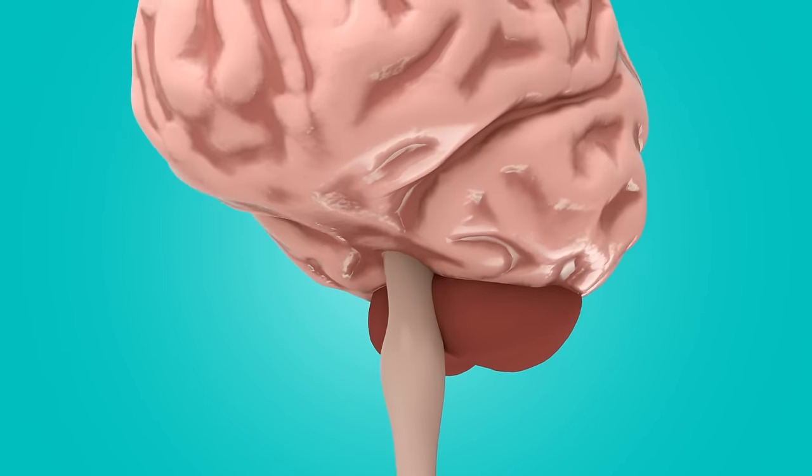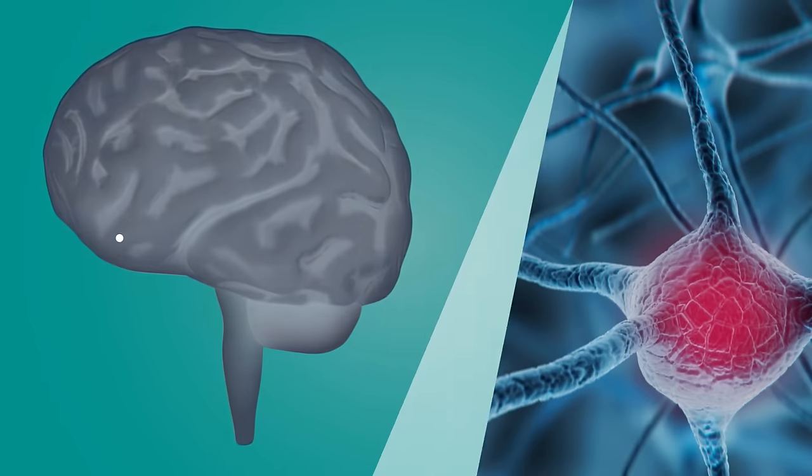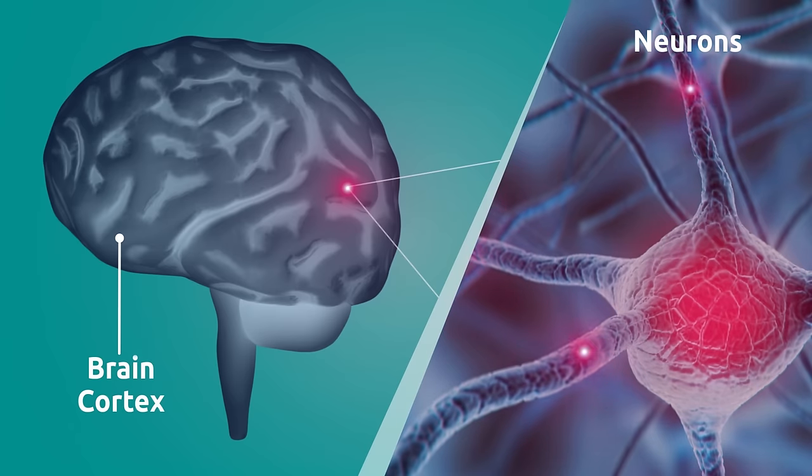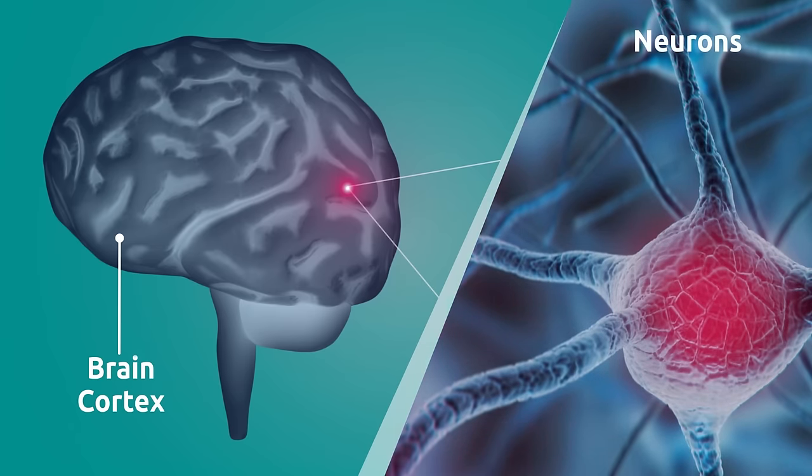The brain cortex is the outermost layer of our brain. It consists of neurons, a type of interconnected cell that transmits information generated by nervous impulses.